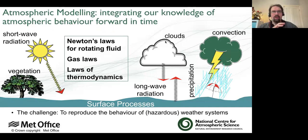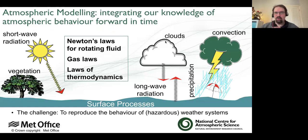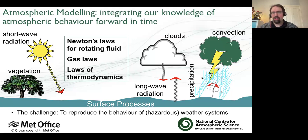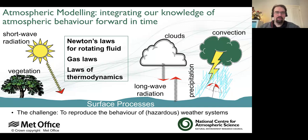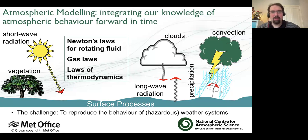These models have various different aspects that are modelled within this overarching framework. They need to have understanding of radiation, clouds, convection, the hydrological cycle, vegetation, and surface processes. They solve various physics equations to give a reasonable representation of the atmosphere. UKCA is built within this kind of modelling framework.